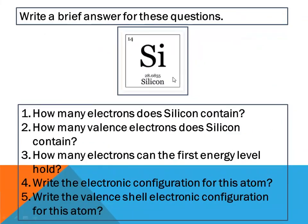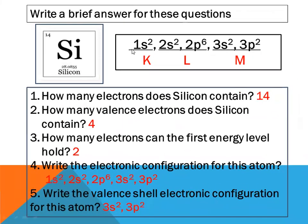Another example: observe the diagram. It is silicon, atomic number 14, symbol Si, mass number 28.0855. Answer the following questions. How many electrons does silicon contain? 14. How many valence electrons does silicon contain? We must write the configuration and identify the valence shell. How many electrons can the first energy level hold? Write the complete electronic configuration for this atom.